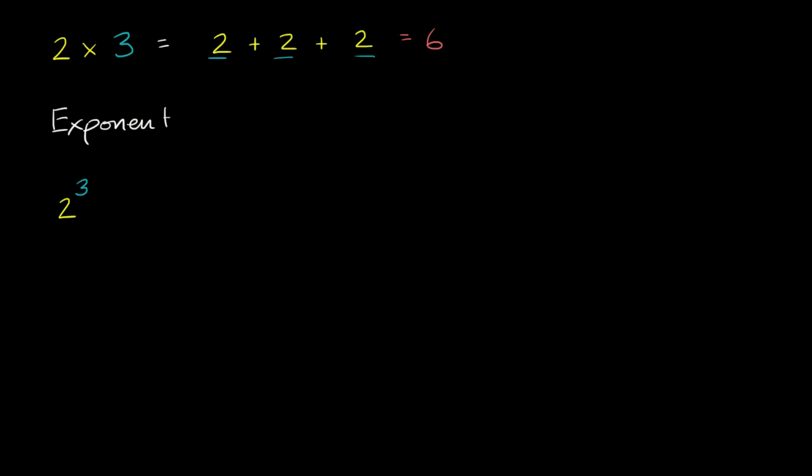So if I have 2 to the third power, this literally means multiplying three 2's. So this would be equal to not 2 plus 2 plus 2, but 2 times 2 times 2. I'll use a little dot for multiplication.